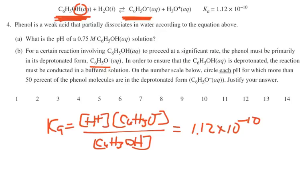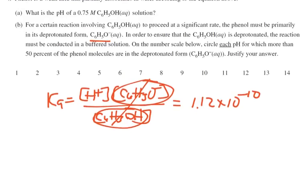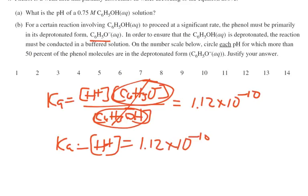So when the deprotonated and protonated forms are equal, those concentration terms cancel out. Therefore Ka equals the H+ concentration, which equals 1.12 times 10 to the negative 10. When we have a 50-50 mixture of the protonated and deprotonated species, pH equals pKa. Taking the negative log of both sides, the pH is 9.95.